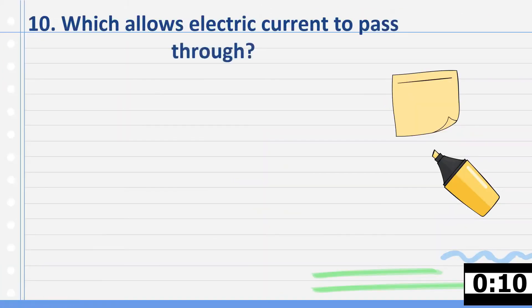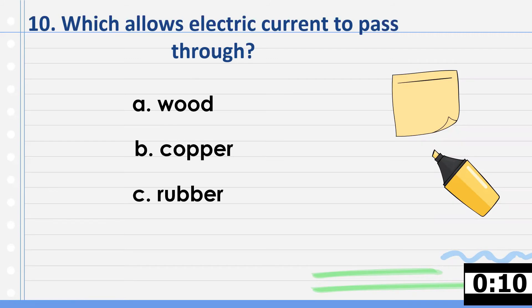Let's proceed to number 10: Which allows electric current to pass through? A) Wood. B) Copper. C) Rubber. Or D) Plastic. Or which is an electric conductor? Circle your answer now.